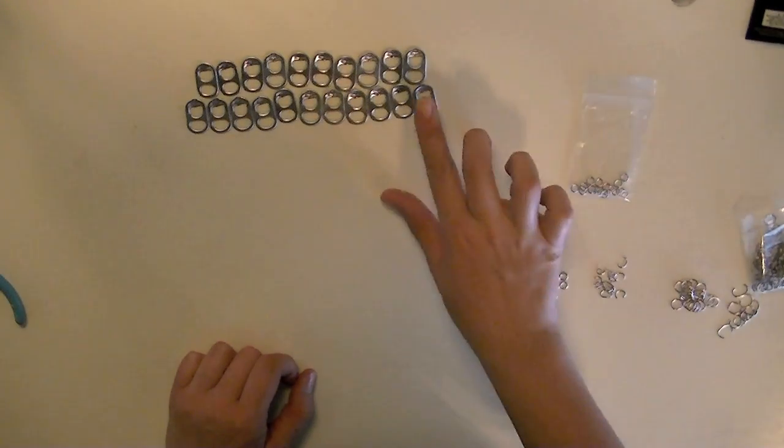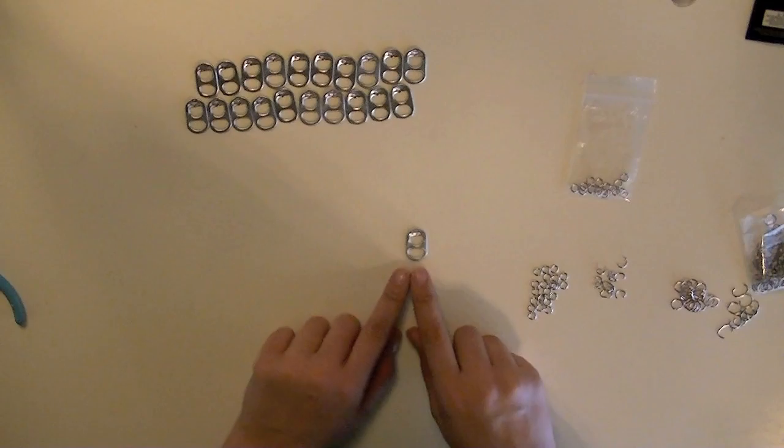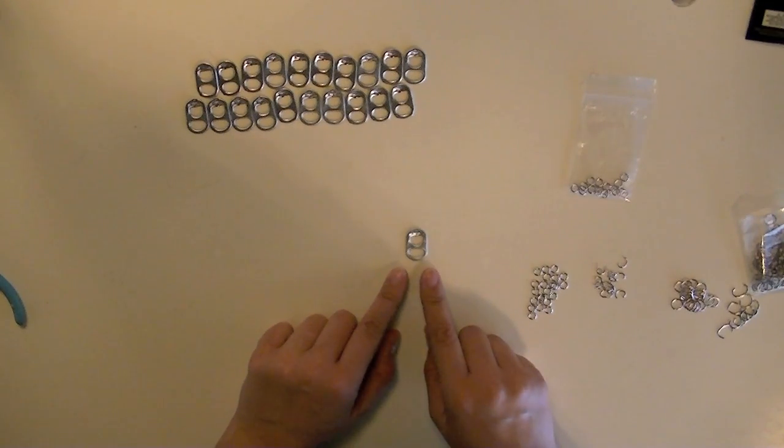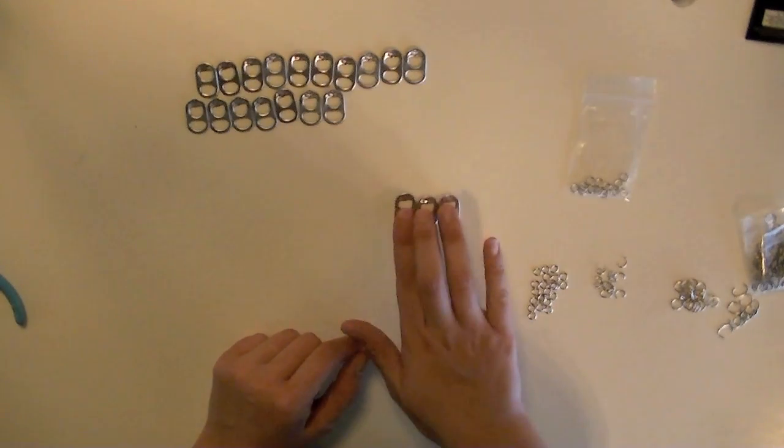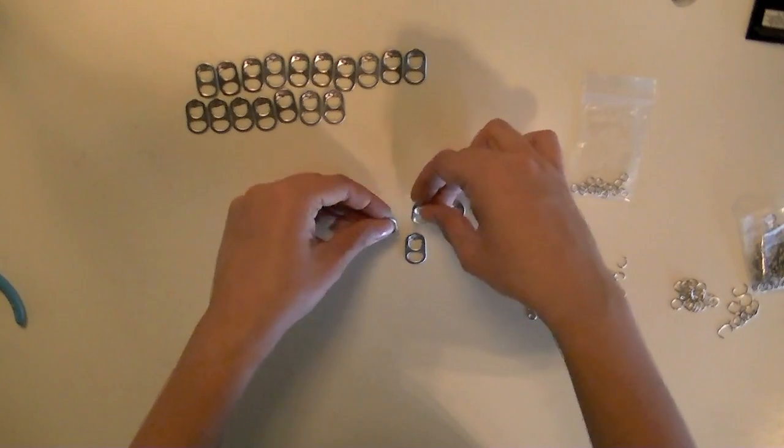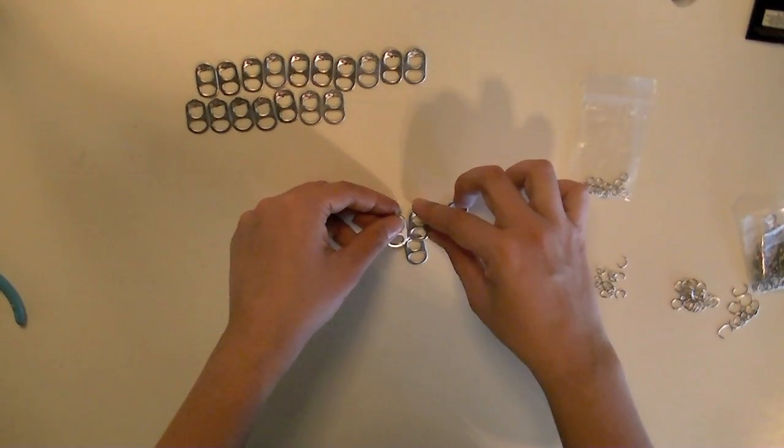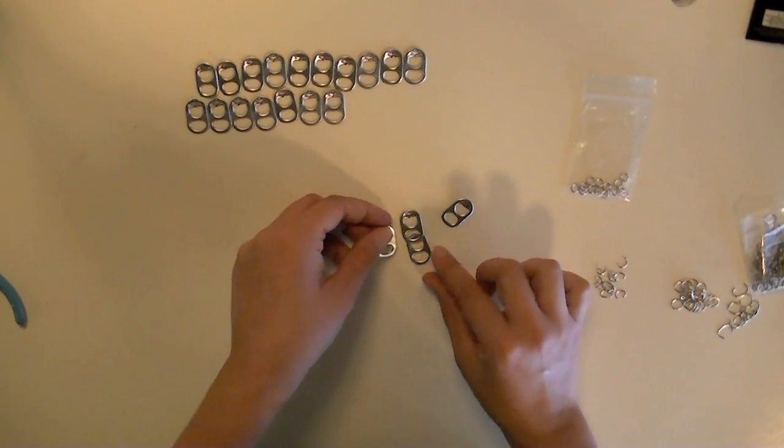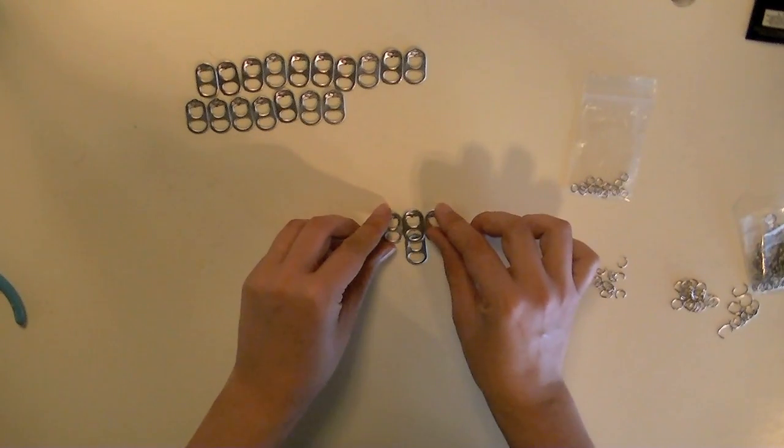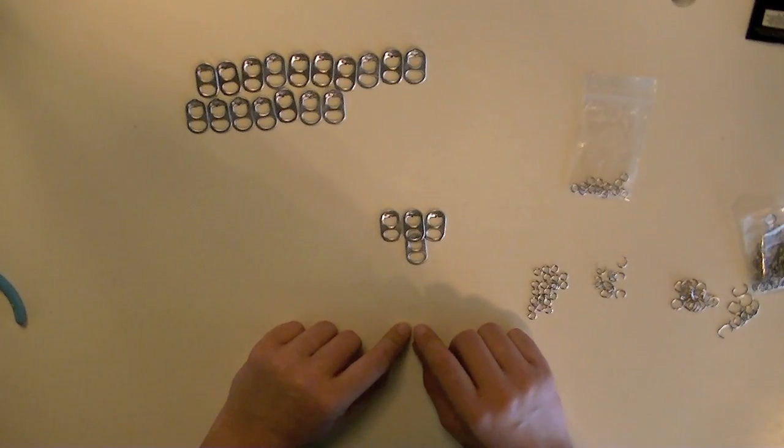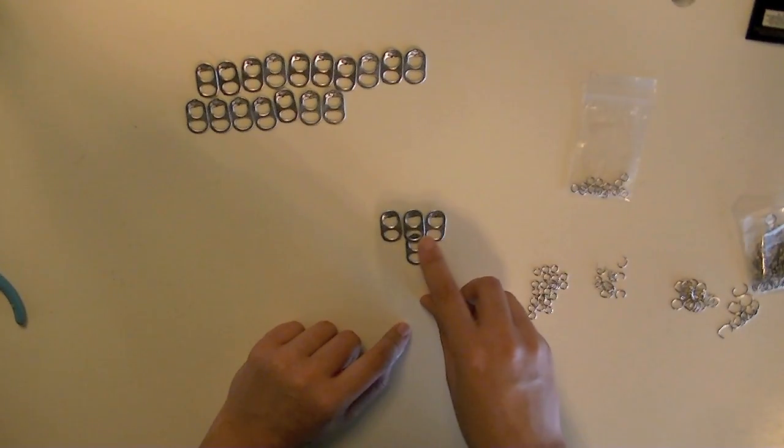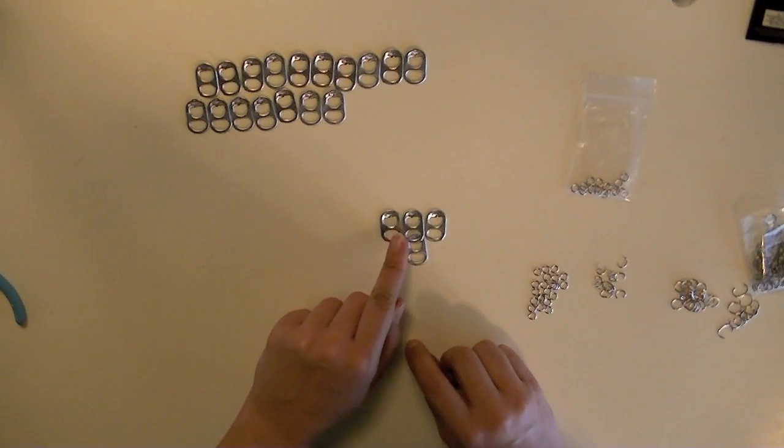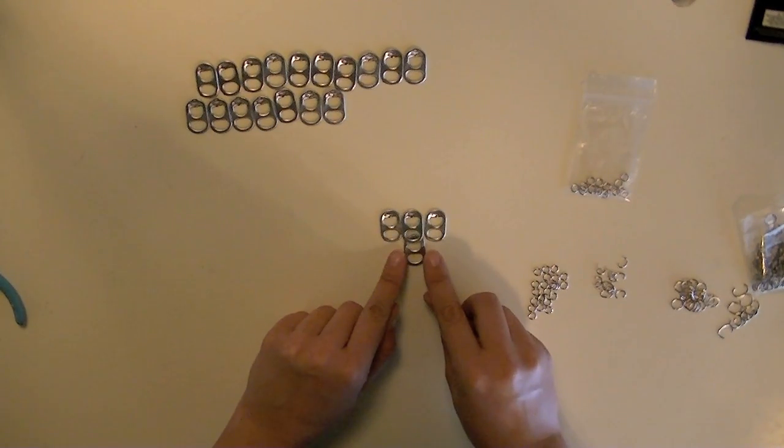To get started, we're going to take our first pop tab. The thin side is always going to be down. Then we're going to take three more pop tabs and put them on top of the first one. Then we're going to take our six millimeter jump rings and connect our right two and our left two to this first one.